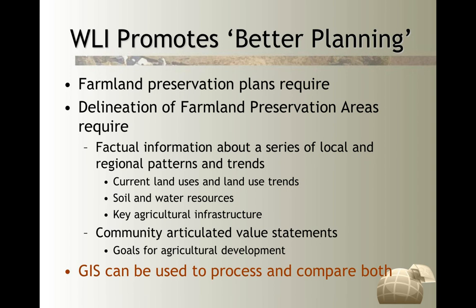Even key agricultural infrastructure can be geocoded from spreadsheets into a database to analyze the landscape spatially using maps. Community articulated value statements — goals and objectives about what they want to see for agricultural development — we can use GIS to process that information. We can create spatial surveys where communities show where they want agriculture to grow or where development should occur, then use GIS in a what-if scenario building session to see if goals and objectives fit with what the data are telling us about a landscape.